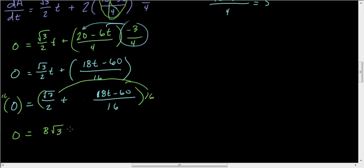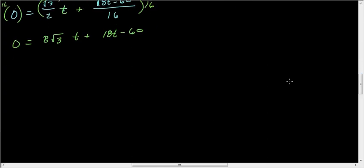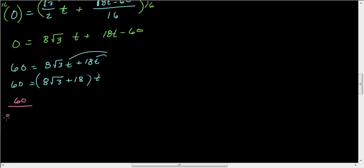If I solve for T, I can get the 60 on the other side. So 60 equals 8 root 3 T plus 18T. I can factor out a T, so that gives me 60 equals 8 root 3 plus 18 times T. Now I can divide both sides by that. So I have 60 over 8 root 3 plus 18 equals T. And that's my value for T.